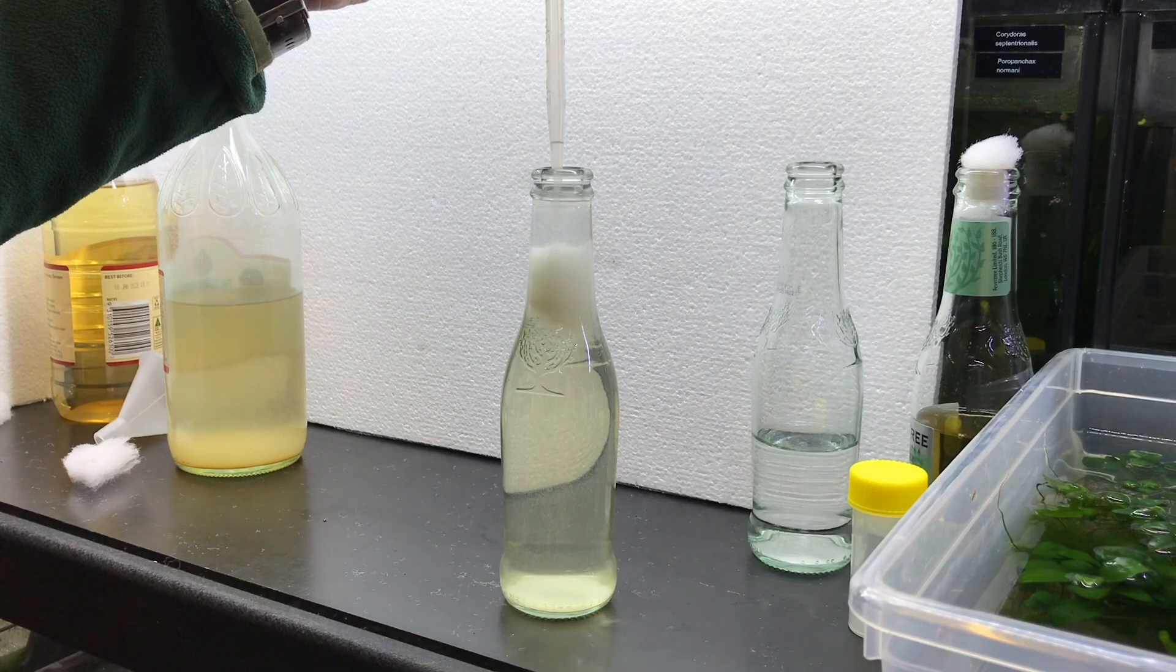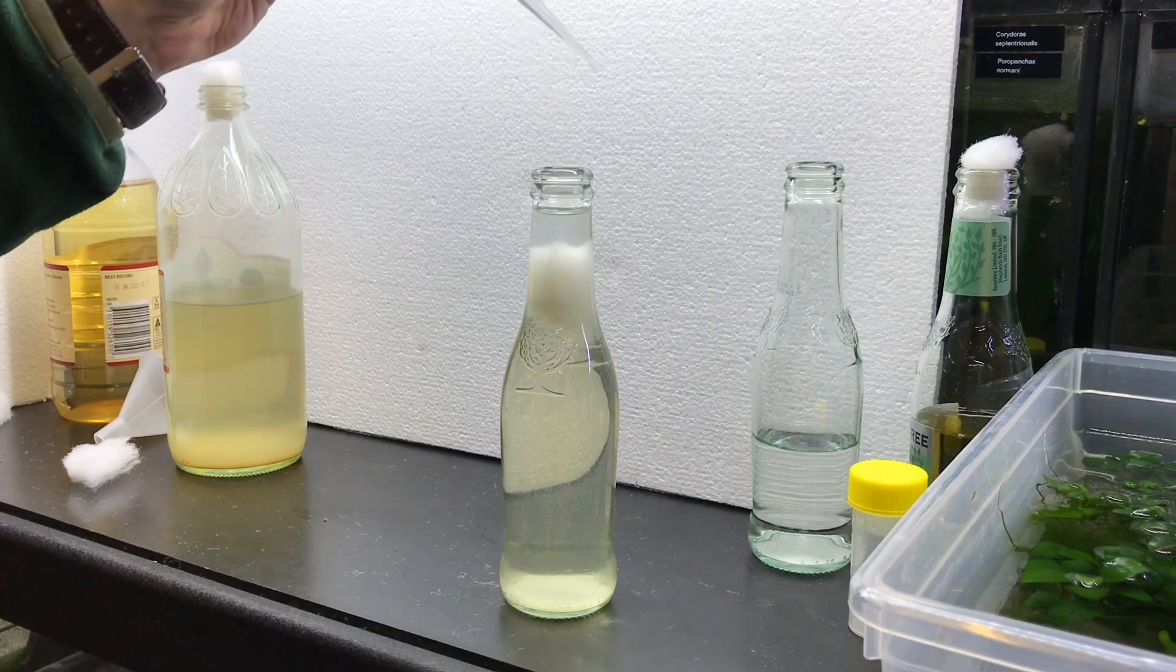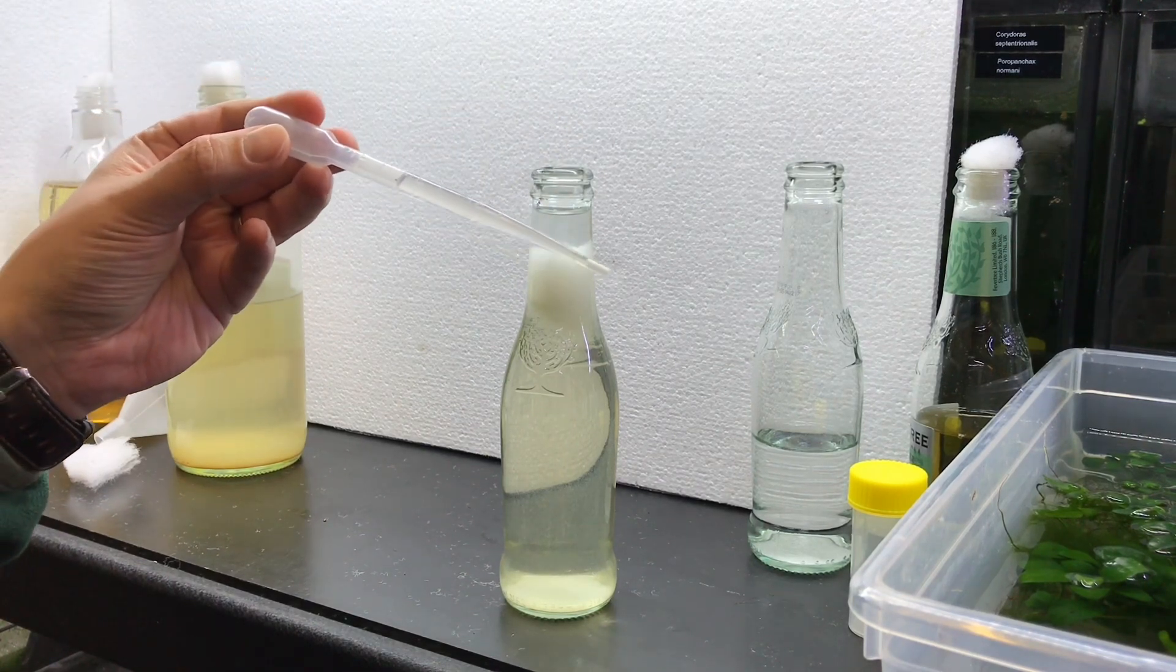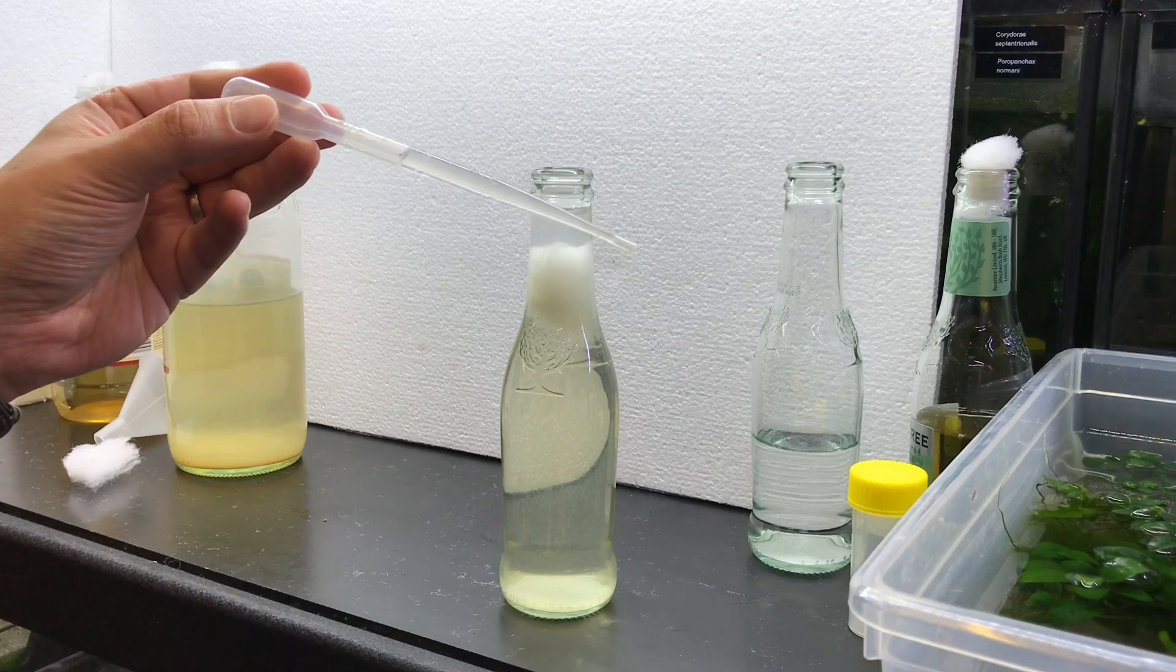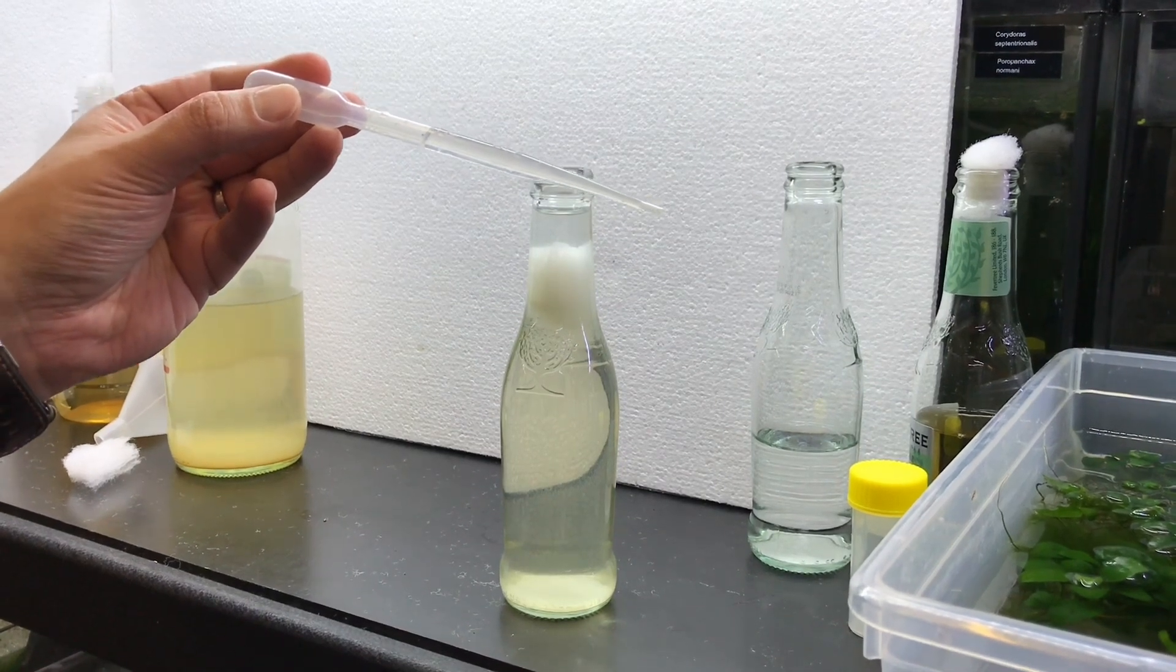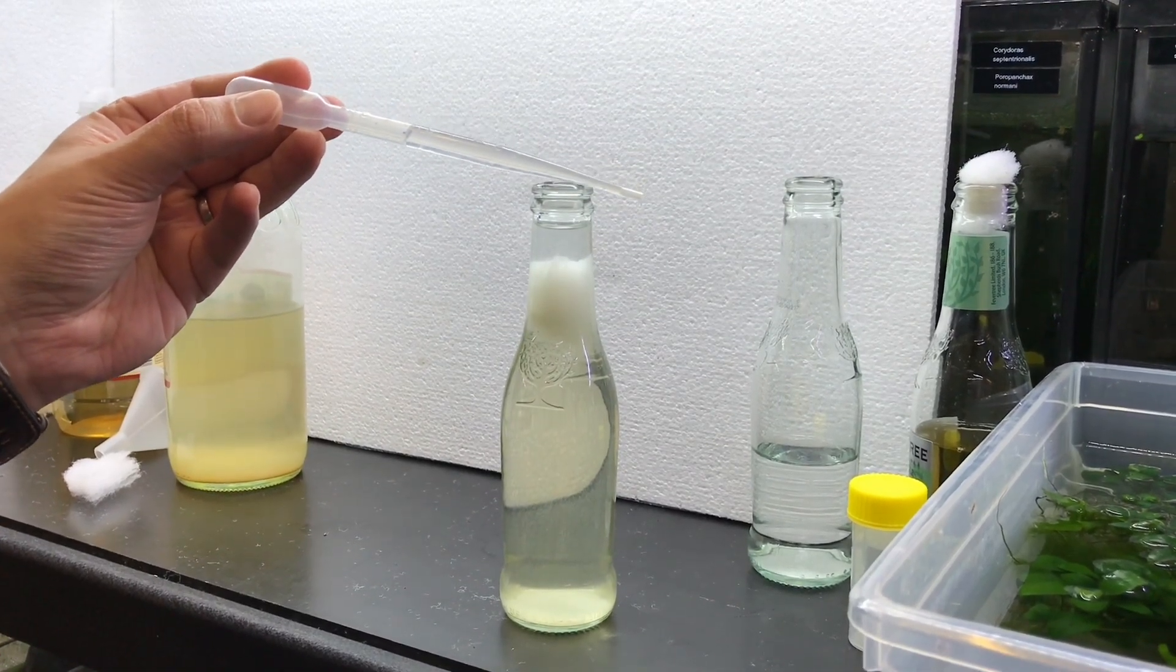And then all we need to do is use a pipette to draw water out from the top section, getting mostly just water and the vinegar eels and starting to feed the fry.